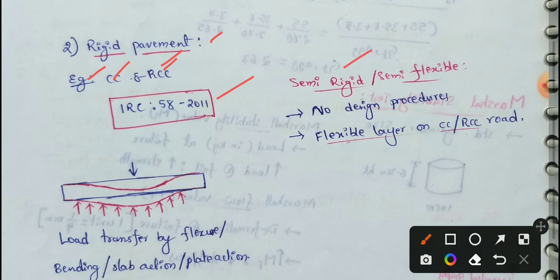This is semi-rigid, semi-flexible. This has no design procedure. Flexible layer on CC road. On CC road, there are flexible layers. I have to add semi-rigid and semi-flexible examples. So, this is flexible pavements and rigid pavements.